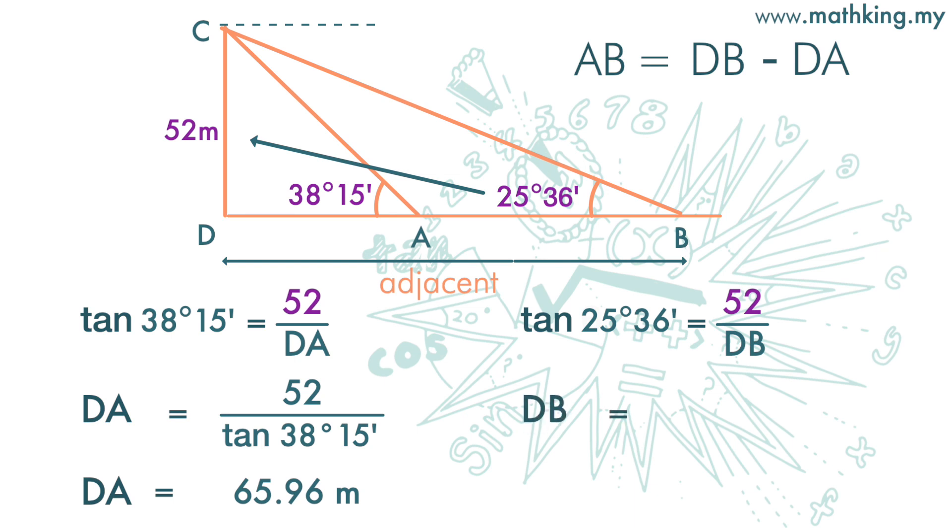Tangent 25 degrees 36 minutes equals 52 over DB. So DB is 52 over tangent 25 degrees 36 minutes. The answer is 108.53 meters, rounding off to two decimal places.